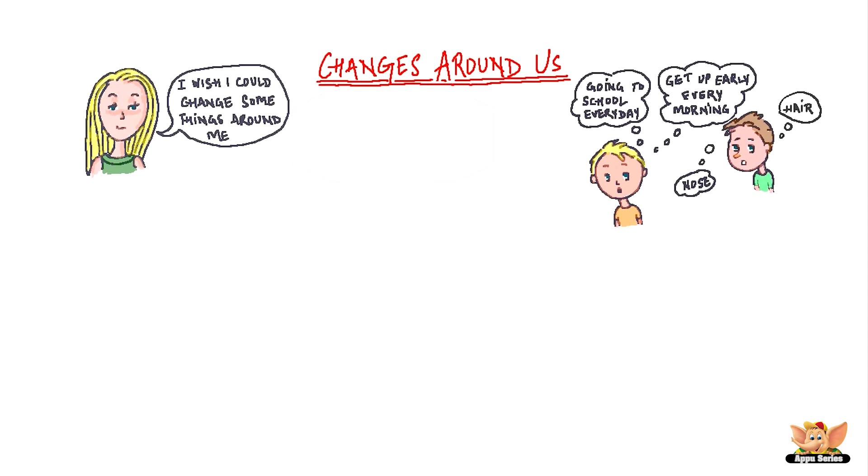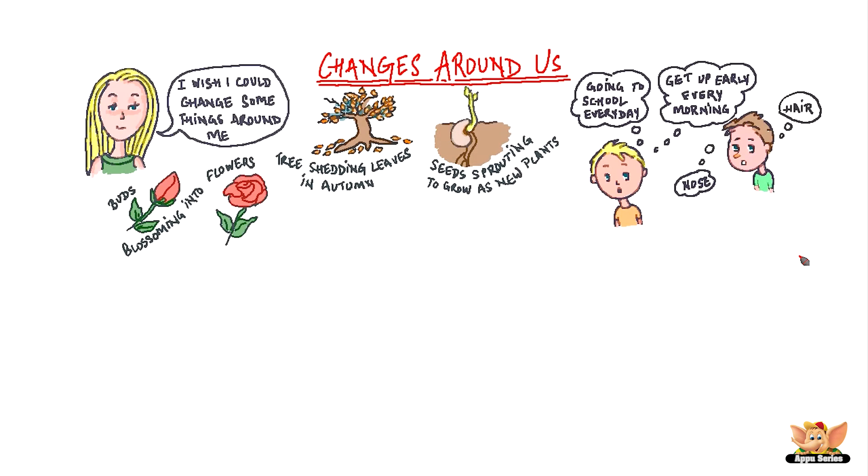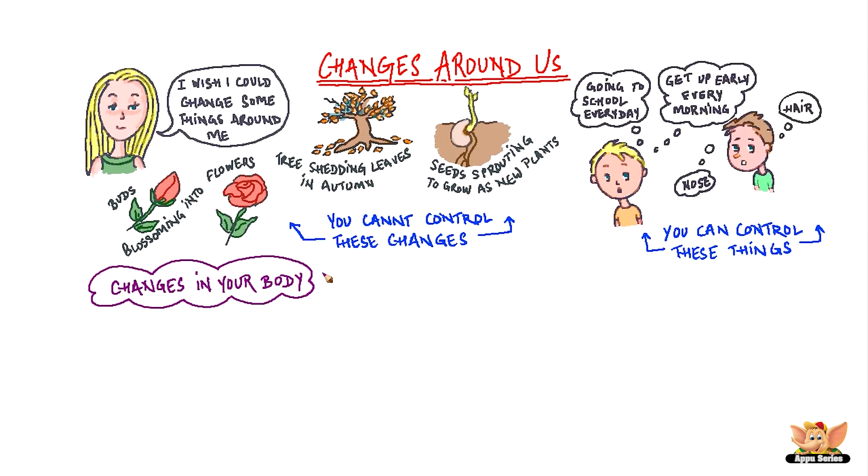You probably can control some of these things, but there are certain changes taking place in our natural world, like trees shedding their leaves in fall or winter, the seeds sprouting to grow as new plants, or buds blossoming into flowers. You cannot control these changes.